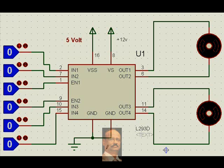Now if we simulate this, the supply is given 12 volts for the motor and 5 volts for the IC.